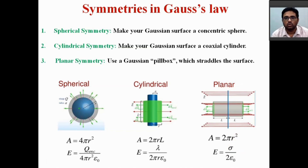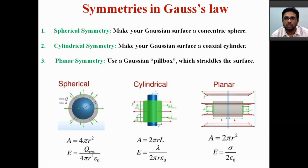Today I am concluding here. In the next class, we will find the divergence of electric field, that is del dot E, directly using the form of the divergence. We have proved the differential form of Gauss's law from the integral form. Next, we want to find out the divergence of electric field directly, which we will discuss in the next class. Thank you.